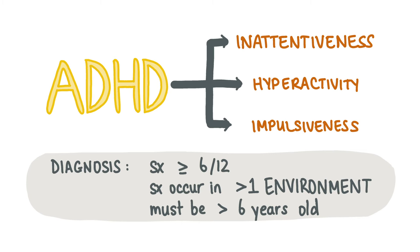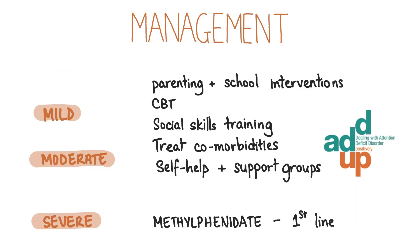Risk factors for ADHD include family history, being male and parental use of cannabis. For a diagnosis of ADHD to be made, the symptoms must have been present for at least six months and occur in more than one environment. The diagnosis is based on history and observation in different settings. A child under six cannot be diagnosed with ADHD. Mild to moderate ADHD is managed with parenting and school interventions, CBT and social skills training, alongside self-help and support groups like ADUP. Comorbid psychiatric disorders like anxiety and depression should be treated. The first-line treatment for severe ADHD is medication. Methylphenidate, which is a CNS stimulant, is used first-line. Side effects of methylphenidate include growth retardation, loss of appetite, insomnia and hypertension.